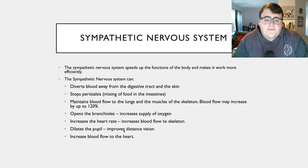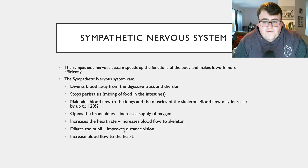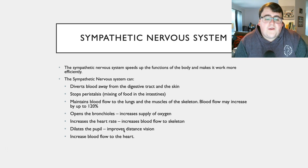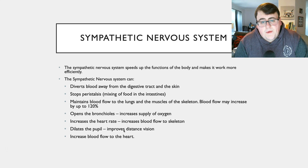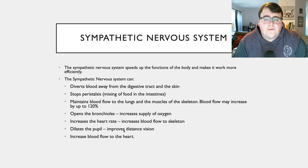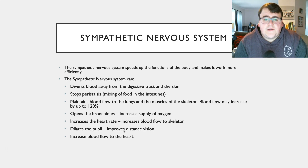The sympathetic nervous system can do a number of different things, including divert blood away from the digestive tract and the skin, stop peristalsis (which is basically the food moving up and down your esophagus or in your intestines), and maintain blood flow to the lungs and the muscles of your skeleton, which means blood flow may increase up to 120%. It opens up the bronchioles to increase your supply of oxygen, which increases aerobic respiration and the amount of energy in your body. It increases the heart rate so blood flows faster to your skeleton from your lungs. It dilates the pupils to improve how far you can see, and it increases blood flow to the heart so that blood is constantly being pumped around the body.